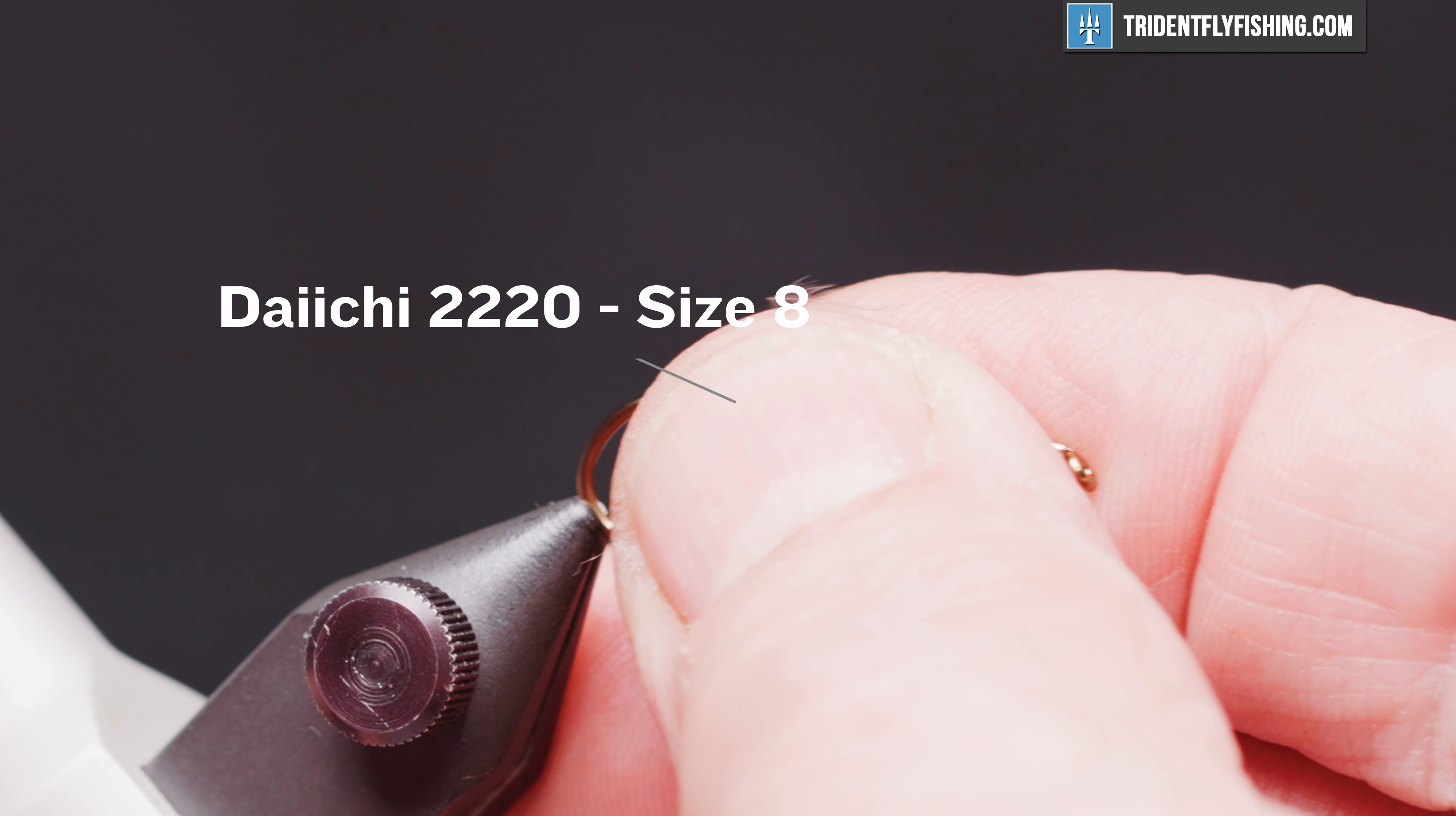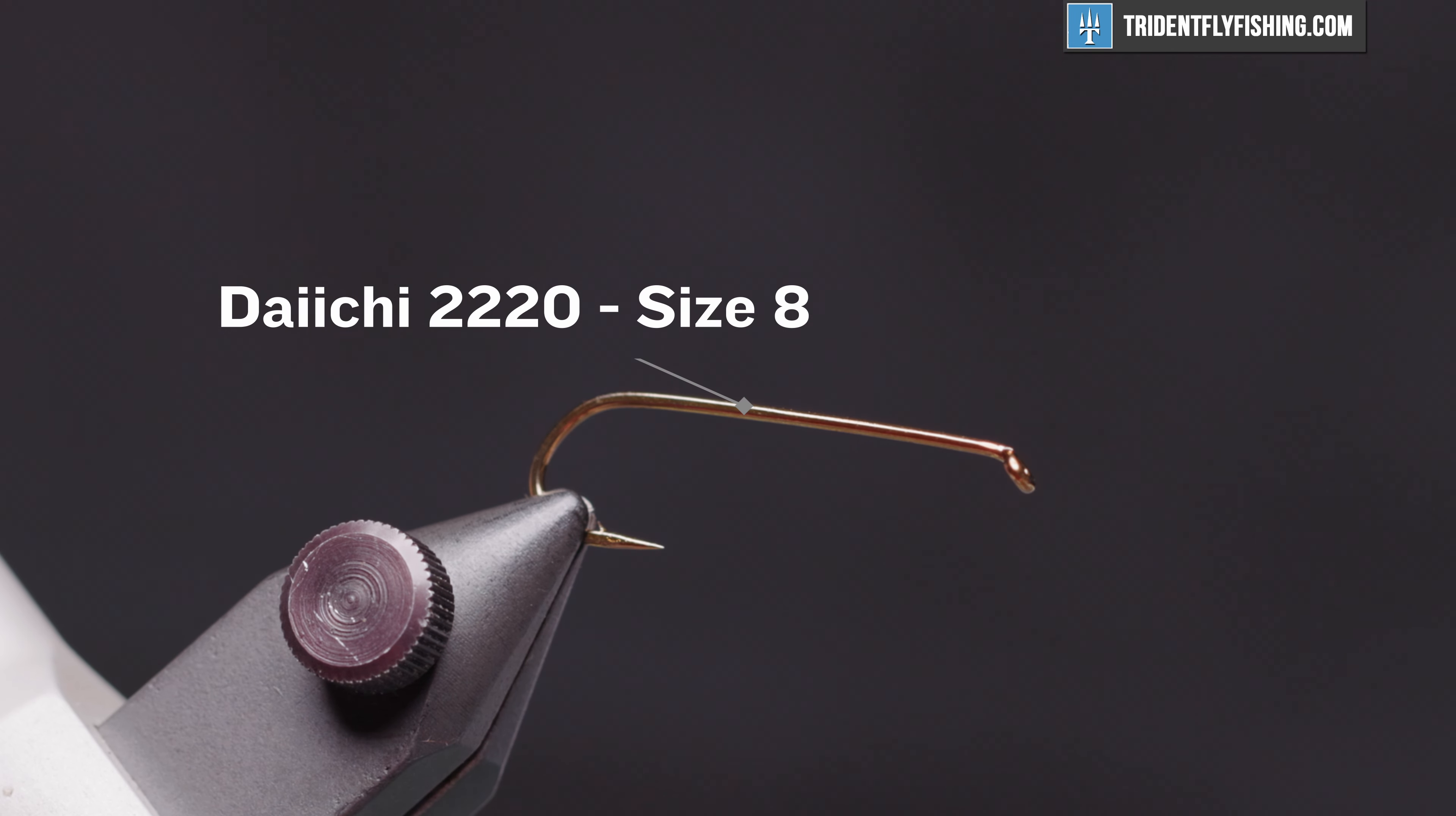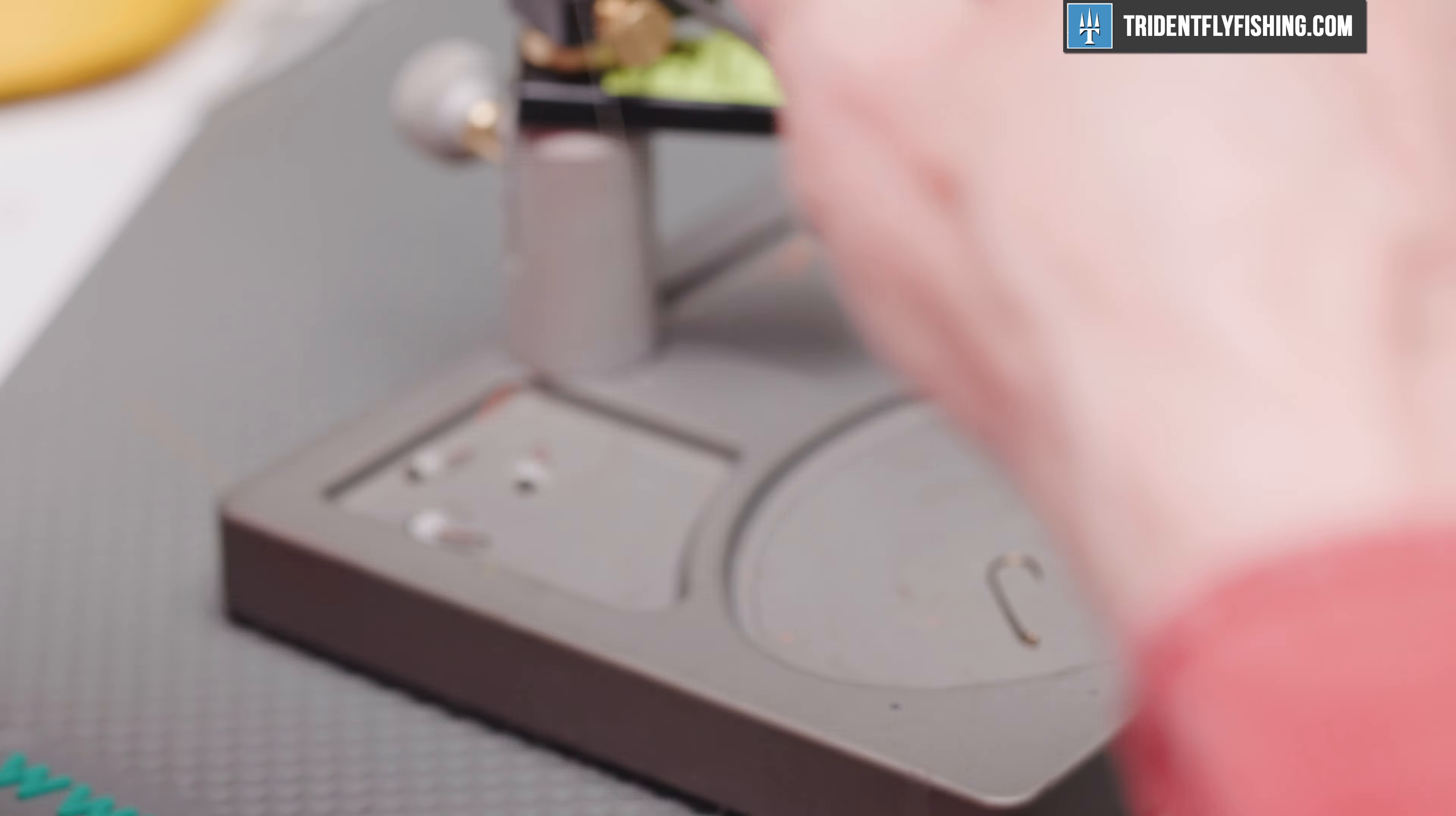It's recommended you tie these flies in sizes two through twelve. This is a Daiichi 2220 in size eight. It's a four extra long. We're going to use two different threads today. We're going to start off with white, get our tie started a couple of eye lengths behind the hook eye, wrap back to the bend of the hook.